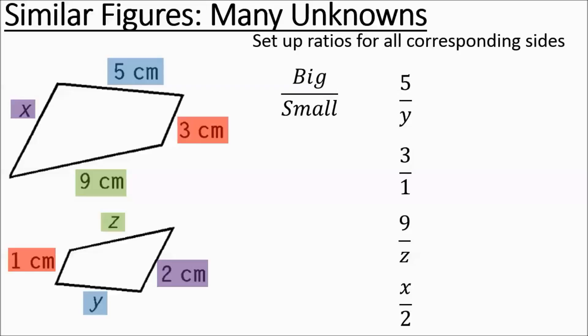Now I see lots of variables in these ratios. Is there one where there's both actual numbers? Yes, there is. That's the one we're going to use to figure out the common ratio. It's already in lowest terms. 3 over 1 is still going to be 3 over 1. All of the other proportions, all of the other ratios can be made into proportions equal to 3 over 1.